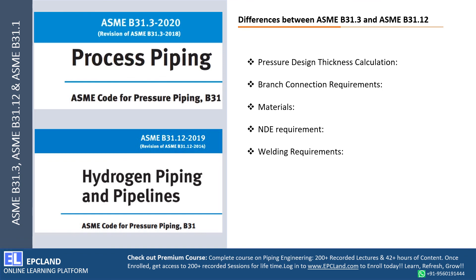These were the five major differences between the process piping code B31.3 and the hydrogen piping and pipeline code B31.12. We covered: thickness calculation differences, how branch connection requirements differ, how material selection differs, how stringent the NDE requirements are, and how welding requirements differ in both codes.